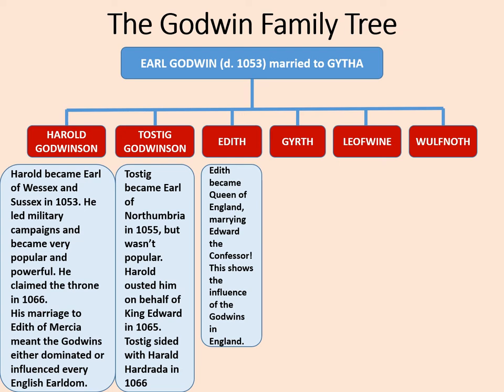Then we have Edith. One of the most important duties of a noble daughter at this time was to marry well. They had more power than perhaps they would do later in the Norman period, but still, marriage was one of the most important ways a woman could have influence. Edith became Queen of England, marrying Edward the Confessor. This shows the influence of the Godwins in England, although they never had any children together, so whether the marriage was ever consummated is, well, up to a guess really.